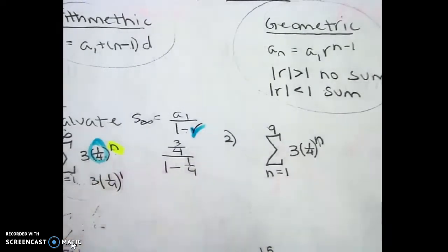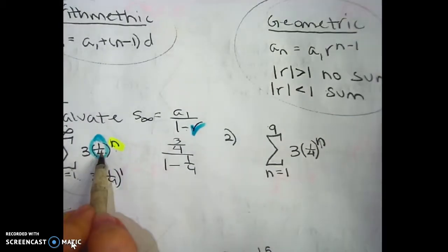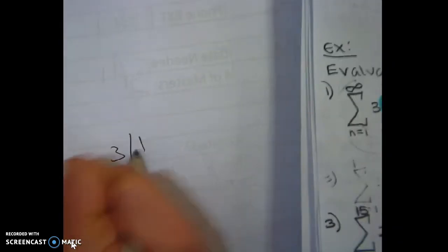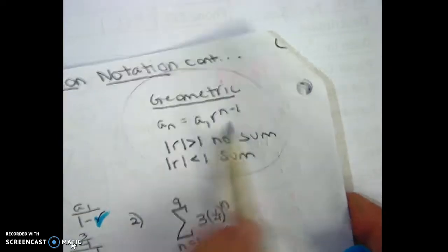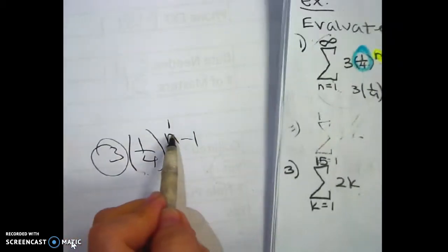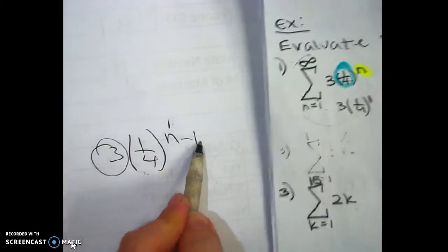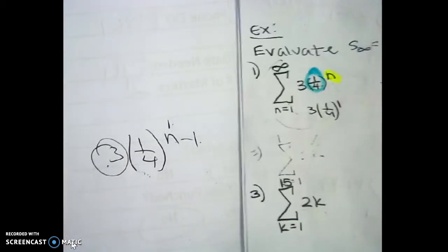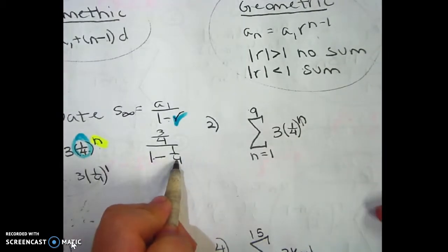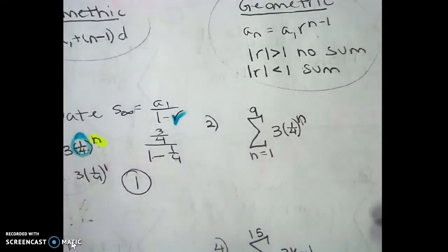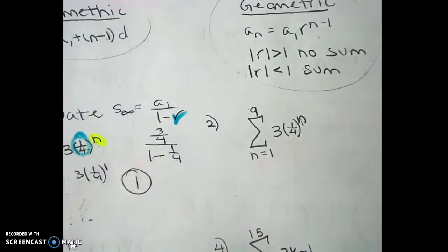Before I continue, I want to back up. If this same question said 3 times (1/4) to the n minus 1, that looks more like the geometric formula. Then I'd know automatically that 3 is my first term. If you're not sure, plug in 1: 1 minus 1 is 0, anything to the 0 power is 1, times 3 gives that. So 1 minus 1/4 is 3/4, and 3/4 divided by 3/4 is 1. The sum of the infinite geometric sequence is 1.